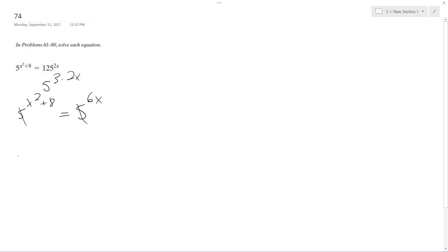Because they have the same base, we can drop them. And we get x squared plus 8 is equal to 6x. And then we get x squared minus 6x plus 8 equals 0.